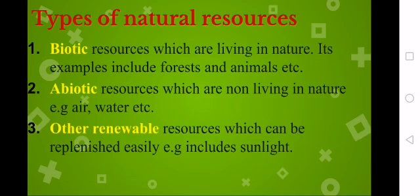Renewable resources are those which can be replenished easily, and these include sunlight. However, due to global warming the temperature of our world is rising. If the temperature or sunlight increases too much — like if our ozone layer is destroyed — then sunlight is also converted into harmful radiation.